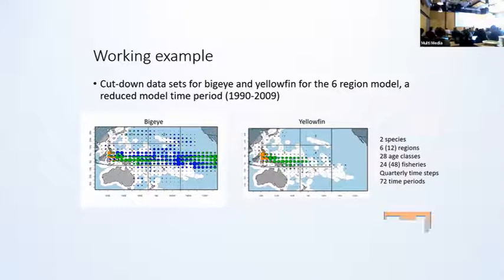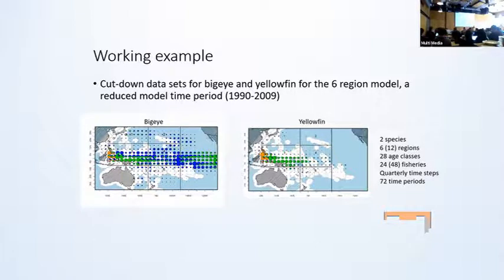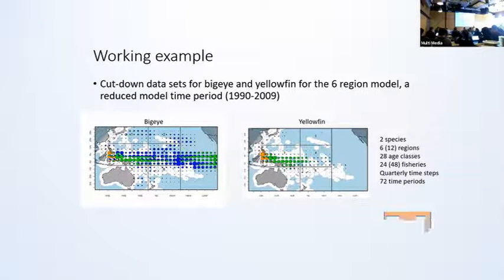For doing these tests, a set of cut-down data sets were created from the big eye and yellowfin models, having some complexity but with a reduced model time period. What we wanted to achieve was rapid computation with the testing, yet retaining the full extent of the parameterizations being used in the large complex tuna assessment models. Note that today no production multi-species stock assessment using MultiFAN-CL has yet been completed, so what I present are testing results being a demonstration of the implementation of the multi-species partition.